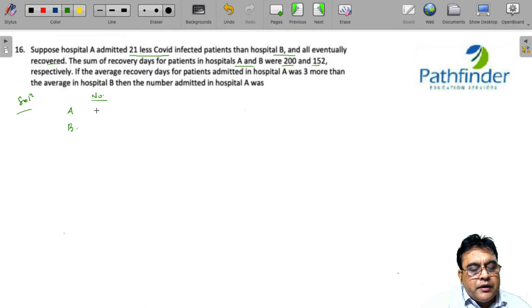Let us say A had A patients. So obviously B will have A plus 21 patients, and the total number of recovery days for patients admitted in hospital A and B were 200 and 152, and you are given that average recovery day for patients in A was three more. So average was three more in A than the average in hospital B.